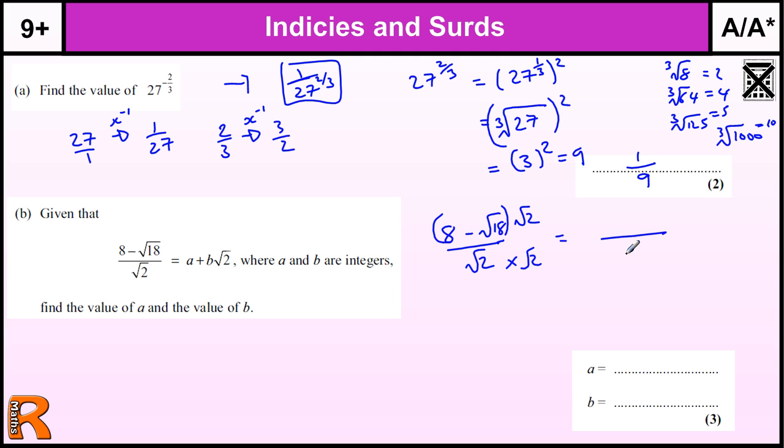When we times the bottom by the square root of 2, we get the square root of 4, and hopefully we know the square root of 4 is just 2. So that's why we times by root 2, because it gets rid of the square root, because we end up squaring a square number, square rooting a square number, to get a whole number.